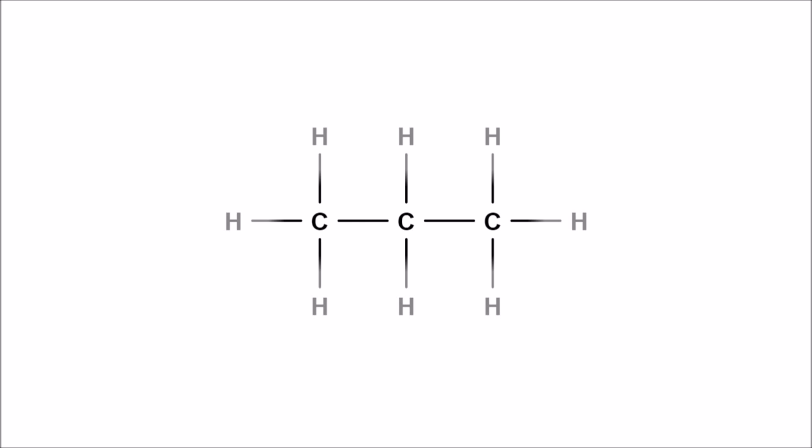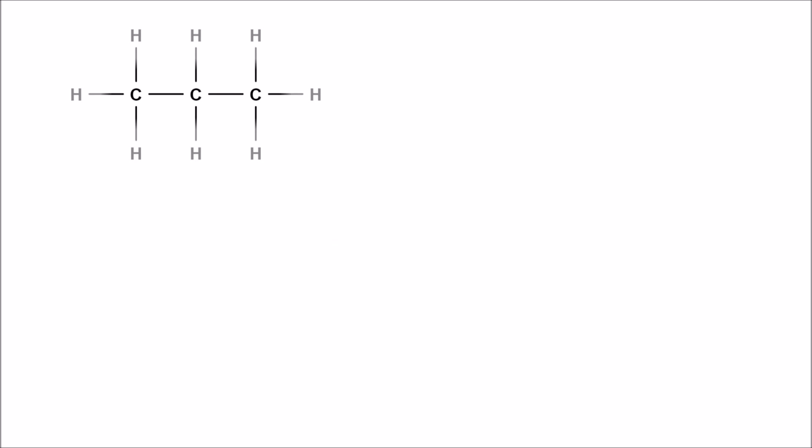We'll spend more time in future videos talking about the different types of hydrocarbons, how we name them, and their chemical properties. But for now I want to focus on the different ways that we can represent hydrocarbons. What we have on screen right now is a molecule called propane — you'll notice this molecule has one, two, three carbons, and each carbon fills the rest of its bonds with hydrogens.